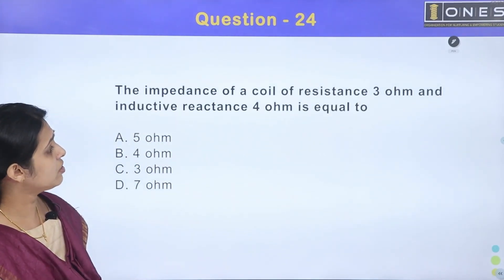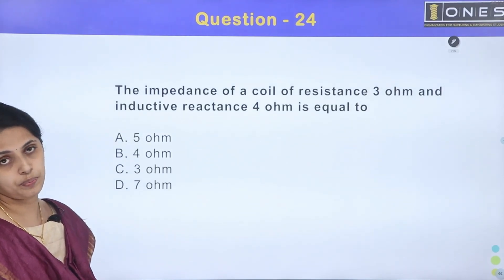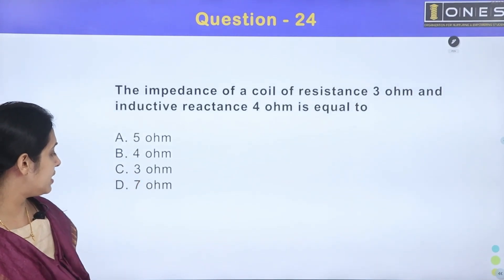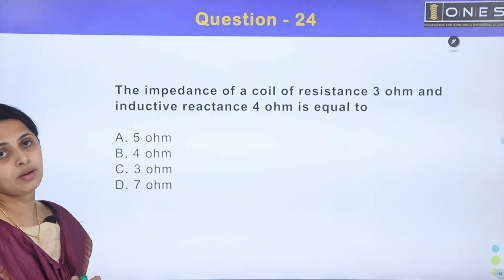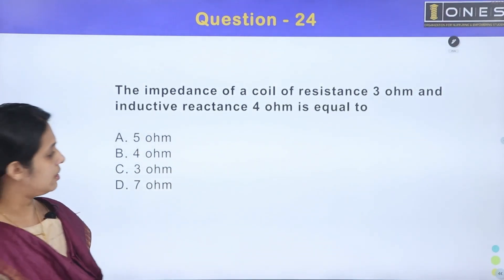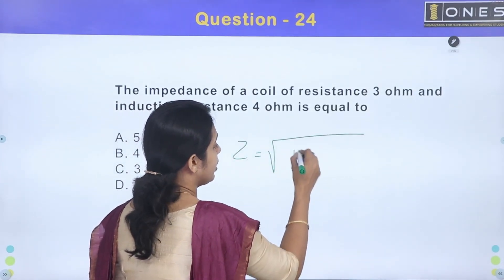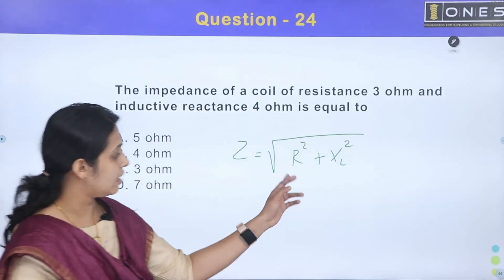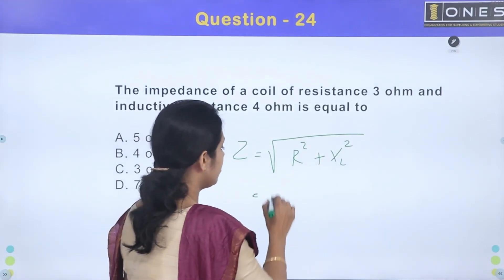Next. The impedance of a coil of resistance 3 ohm and inductive reactance 4 ohm is equal to: Option A: 5 ohm, Option B: 4 ohm, Option C: 3 ohm, Option D: 7 ohm. We calculate the impedance using Z = √(R² + XL²).